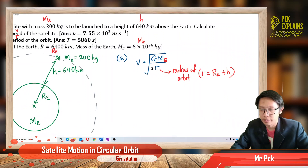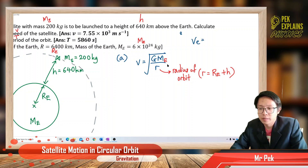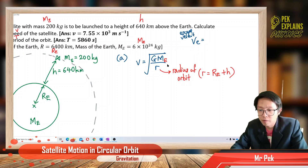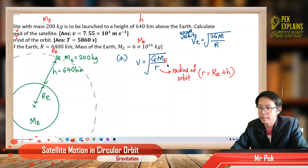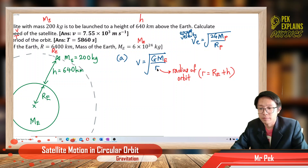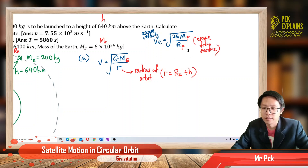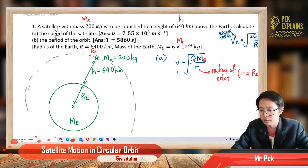For the speed of satellite, it is v equal to square root of gM over r. This looks very similar to another formula which is escape velocity, which is square root of 2gM over r. But bear in mind, escape velocity uses the mass of the planet and the radius of the planet — because it is escape from the surface, no height. But the satellite speed formula uses the radius of orbit.